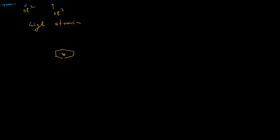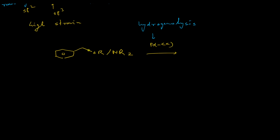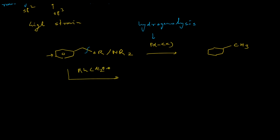Rhodium catalyst is very useful when benzylic groups are present. If you have compounds where an ether or amine group is attached at the benzylic position, palladium on charcoal will cause hydrogenolysis — it will cleave the benzylic carbon–oxygen bond, giving both a hydrogenated and hydrogenolyzed product. But if you want specifically the aromatic ring hydrogenated, you must choose rhodium catalyst, which can selectively hydrogenate the aromatic system.